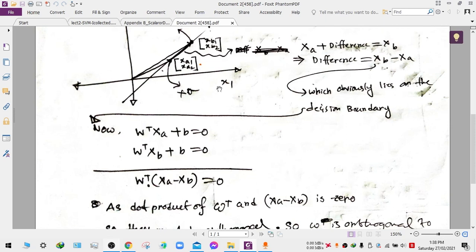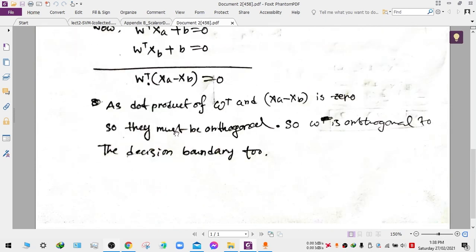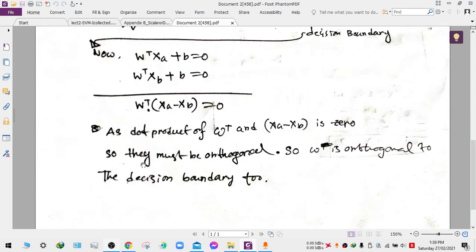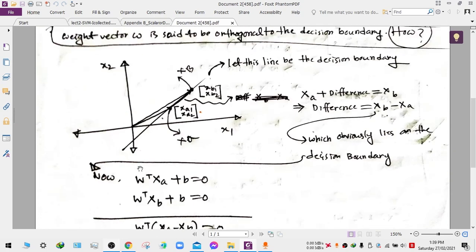So that's it. This way you can show that the weight vector of the decision boundary is orthogonal to the boundary itself.